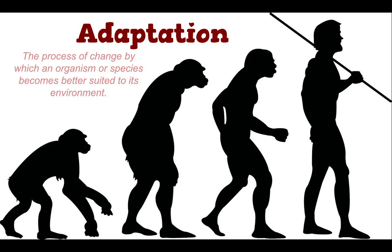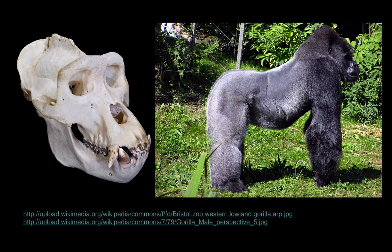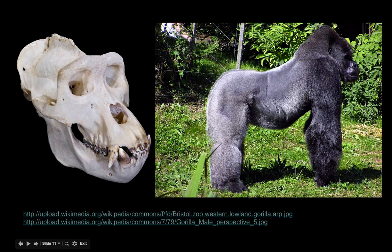Adaptation is a process of change by which an organism or species becomes better suited to its environment. Hence, the gorilla, if it has a large mandible, is more likely to survive. Other adaptations of the gorilla are the large nuchal crest — that's the ridge on the back of the skull — which is in part to support the large neck, but also relates to the way the gorilla walks.